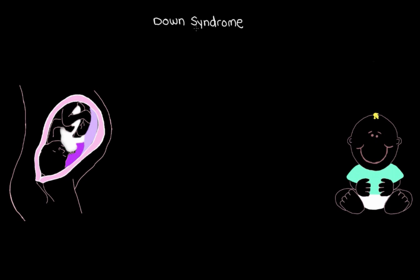When it comes to diagnosing Down syndrome, there are a few different ways we can think about this. Let's start by looking at the different time periods when we can check for Down syndrome. We can break this up as before birth — the prenatal period — and after birth — the postnatal period.